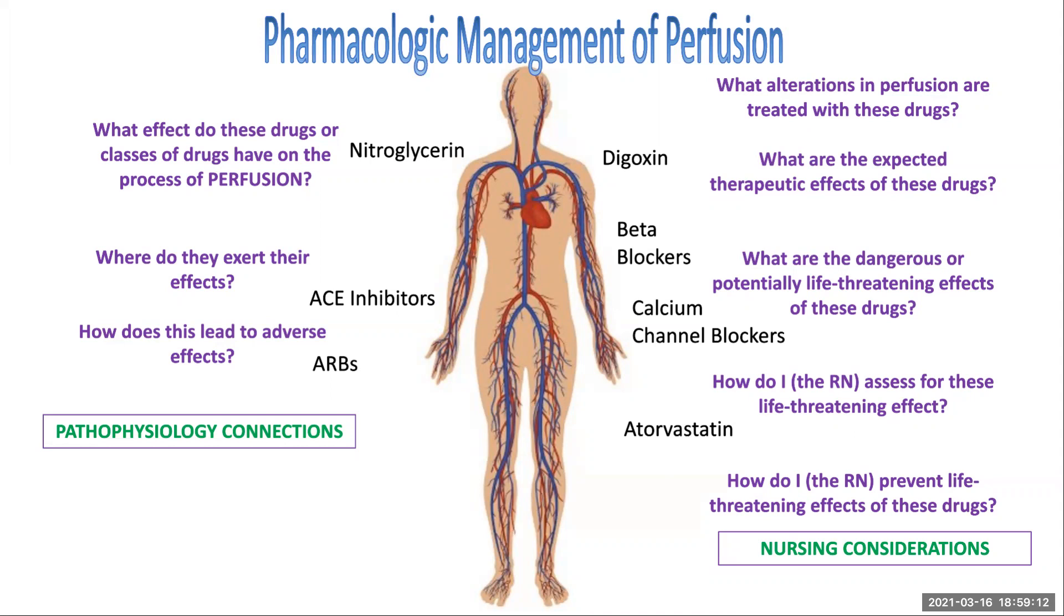Perhaps we are using an ACE inhibitor that will block some of the reuptake of fluid in the renin system so that that helps to reduce the amount of pressure against which the heart has to pump. So you have to think about what is the reason I'm going to use these drugs? What is the alteration of perfusion that makes me need to use one of these drugs? So what's the expected therapeutic effect?